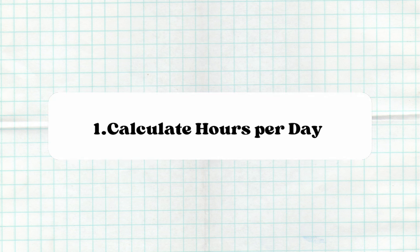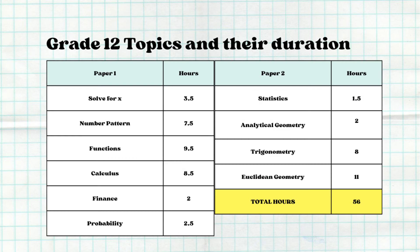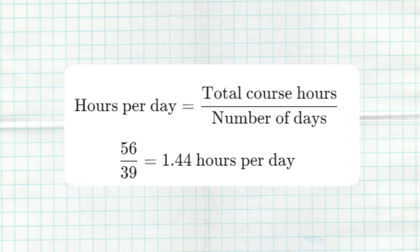So now we need to calculate the hours per day, which is going to be the total hours. Total hours is going to be the total hours from the course—the one that I've highlighted in yellow—then you're going to take your total days, which is going to be the number of days that you calculated before this. Then you're going to use the formula that you see on the screen.